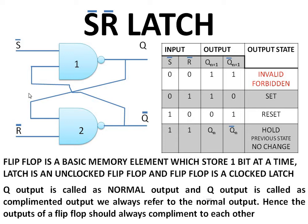Because this latch has two independent inputs, there are four possible combinations at the input. Each combination has its own state with respect to the value of Q. Let us go through them one by one.